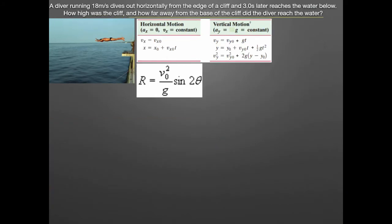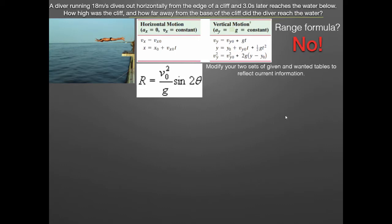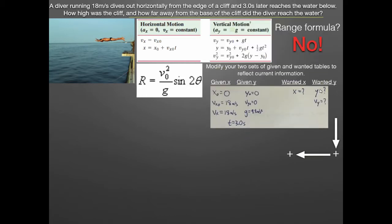Part B asks: how far away from the base of the cliff did the diver reach the water? That's asking for x_final — the final horizontal position. This is related to range, but we still cannot use the range formula because the initial and final vertical positions are different. We update our given and wanted tables: since we now know y_final, we move it from the wanted list into the known list. We are now asked for x_final.